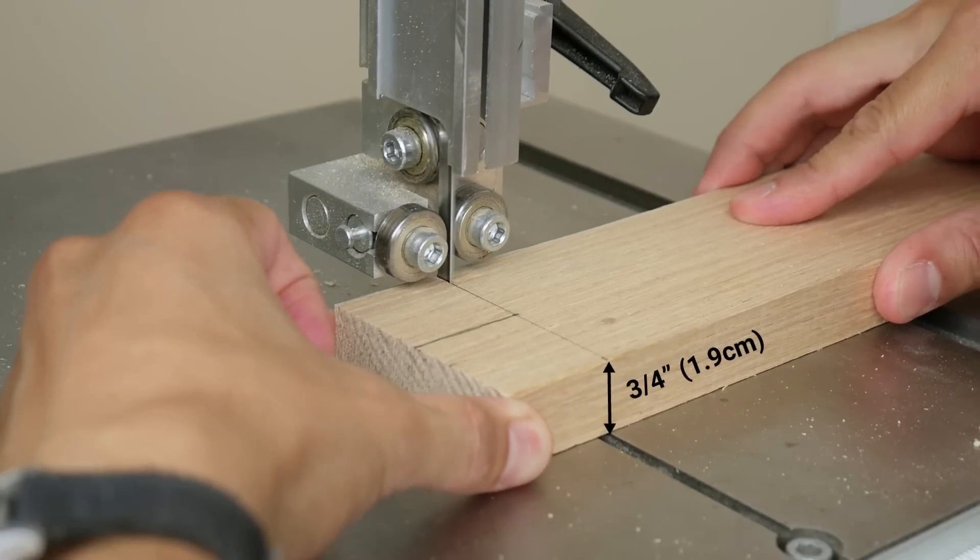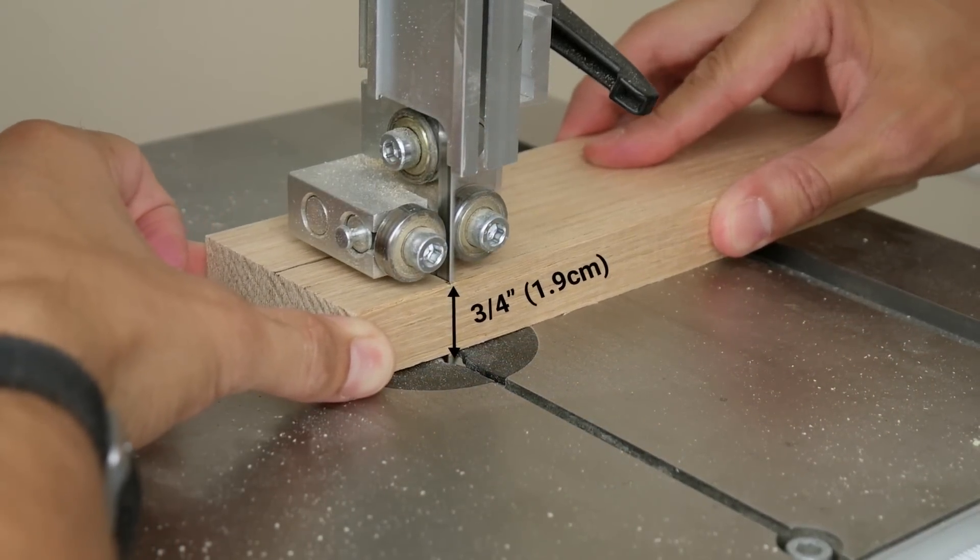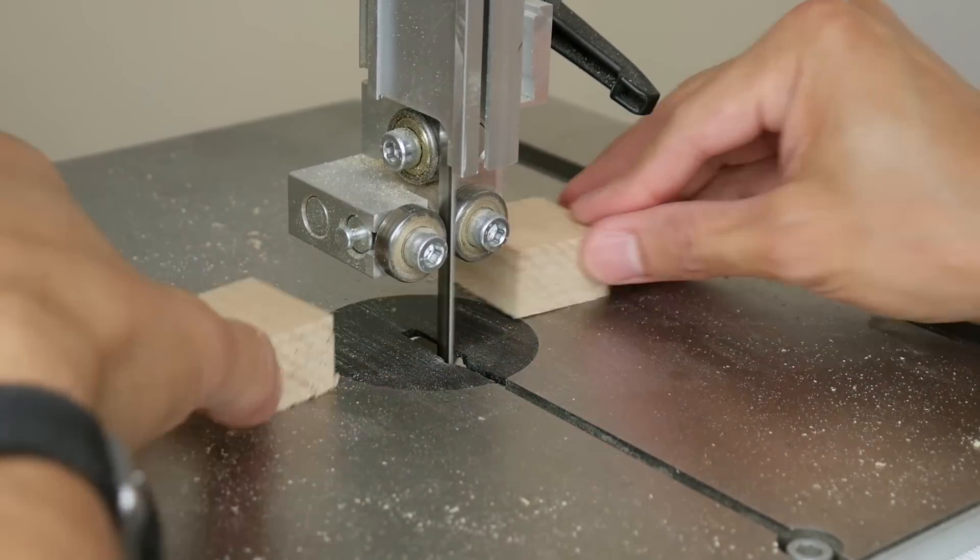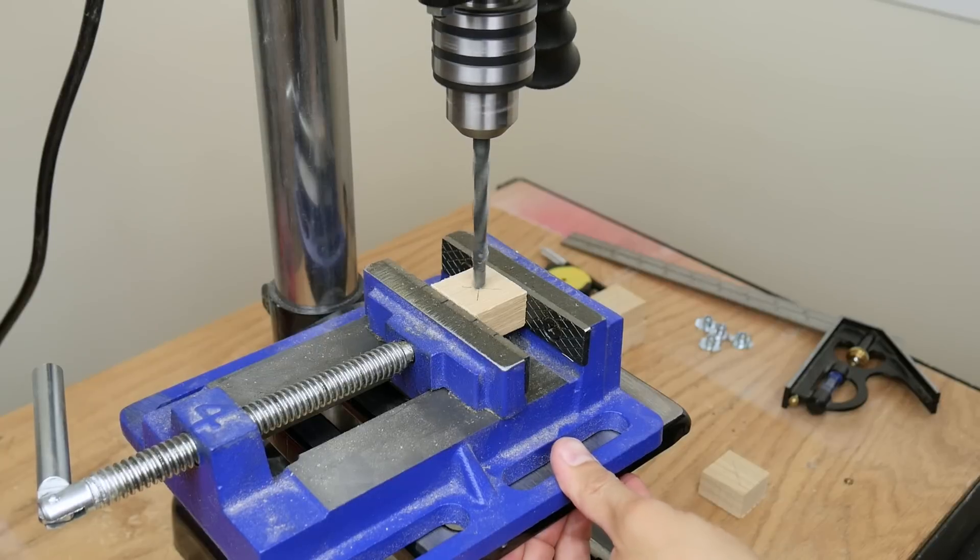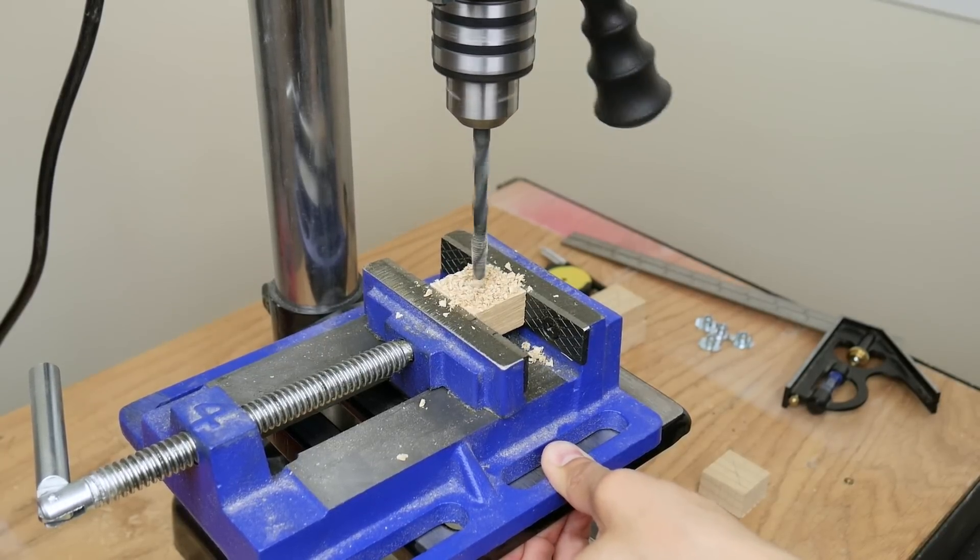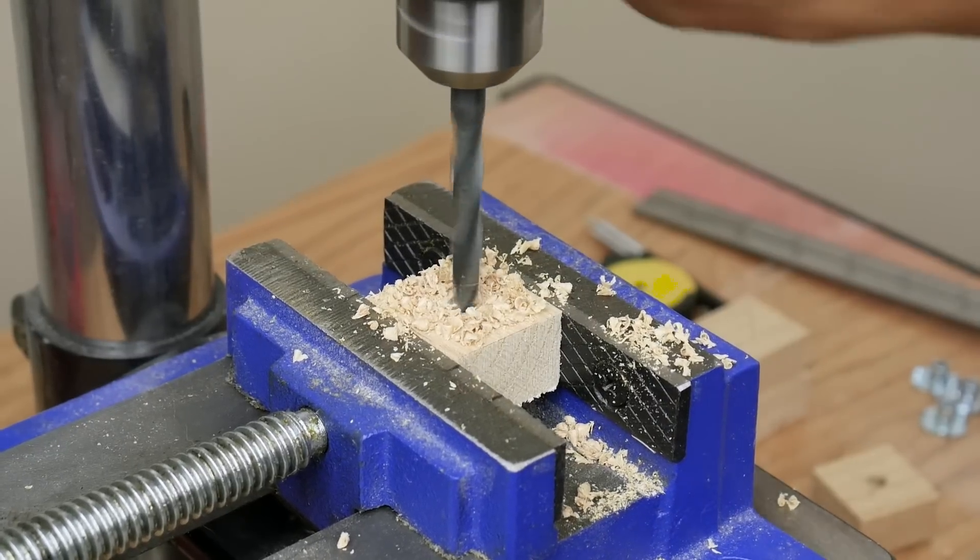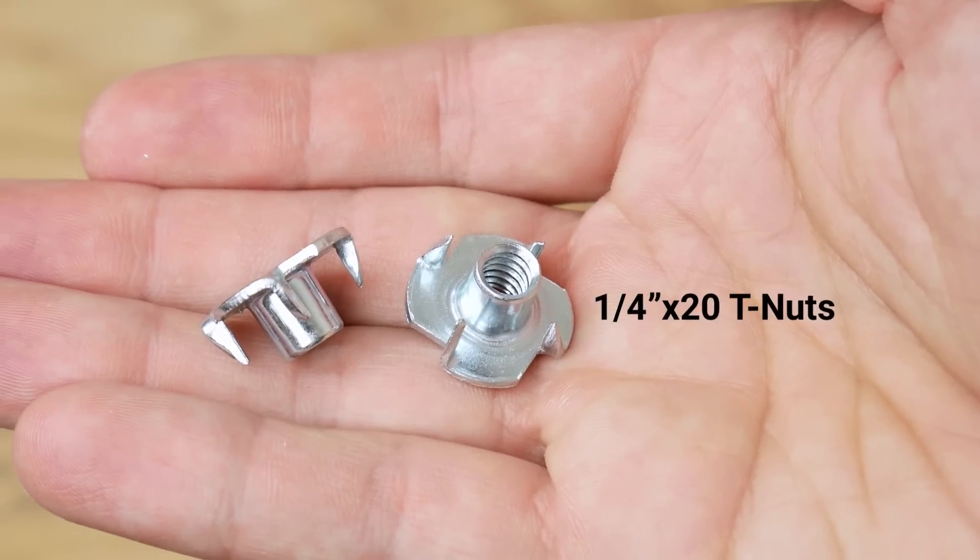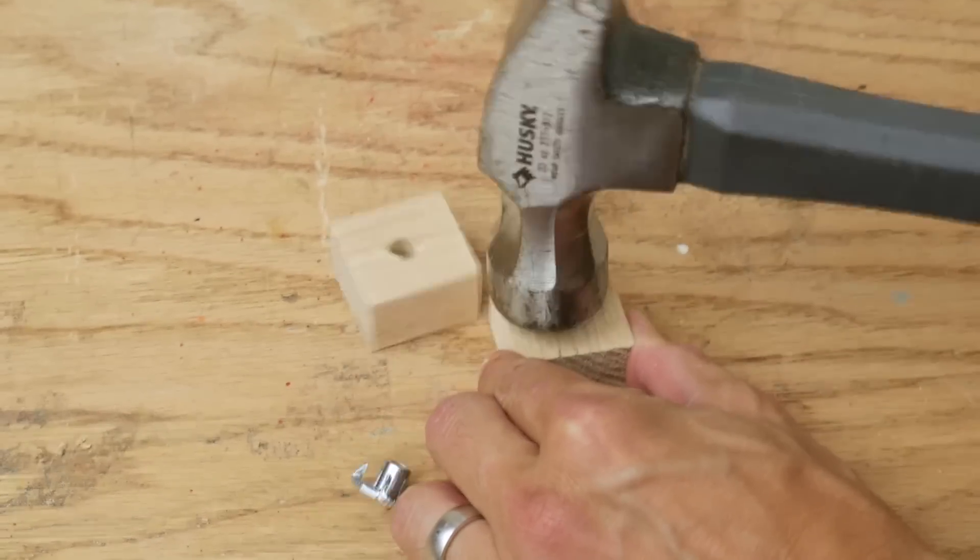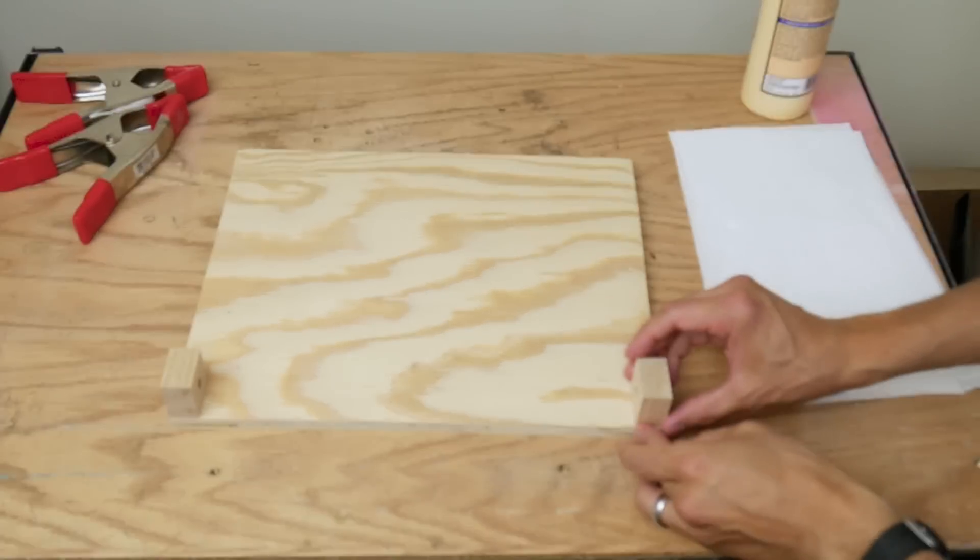Then I got some three-quarter inch thick wood and cut it into two squares with one and one-quarter inch long sides. I drilled a 19/64 inch hole in the center of each square. I got two one-quarter inch by 20 T-nuts and hammered one into each square. Then I glued each square to the bottom outside edge of the plywood.